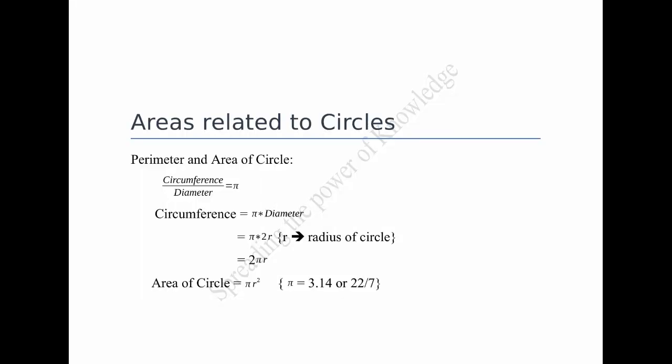First, we will see about the area and perimeter of a circle. The distance covered by travelling once around each circle is called perimeter. We know the circumference of a circle bears a constant ratio with its diameter. The constant ratio is denoted by the Greek letter pi. That is, circumference divided by diameter equal to pi.